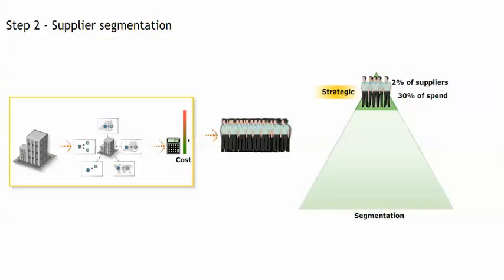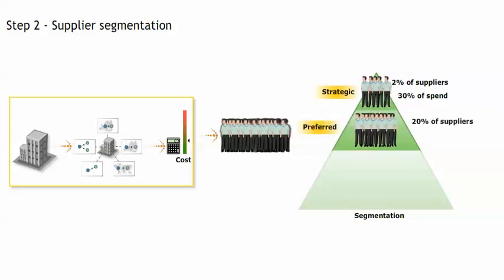The pyramid is often divided into three segments, the top being the strategic suppliers, followed by the preferred suppliers, which is made up of 20% of the total number of suppliers that make up 50% of the entire spend.